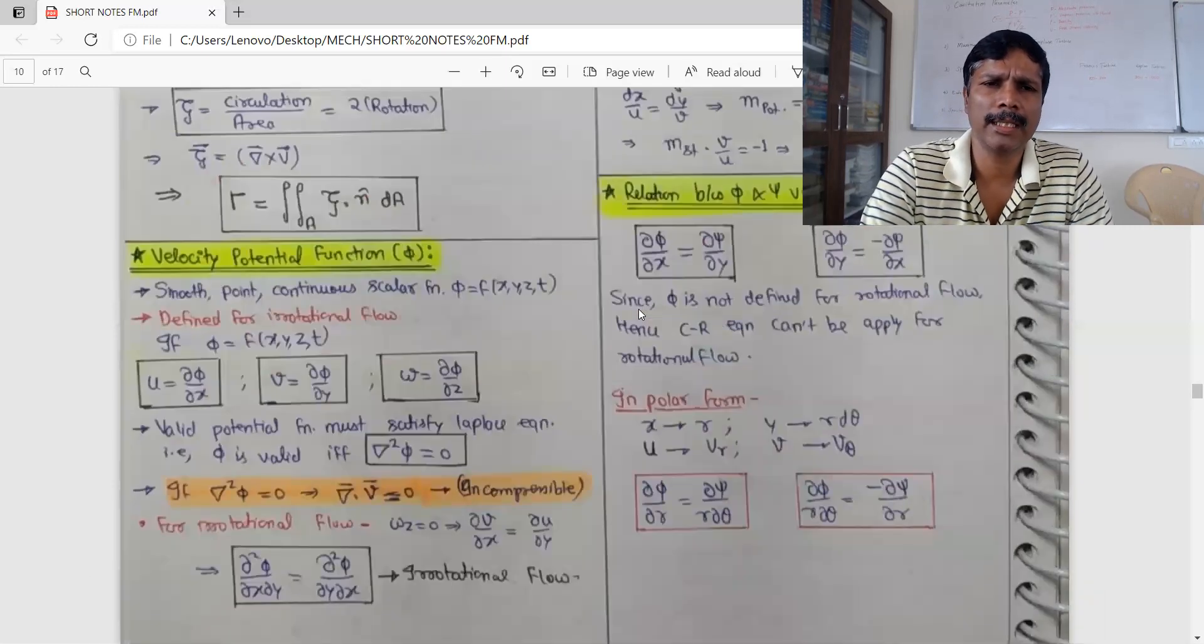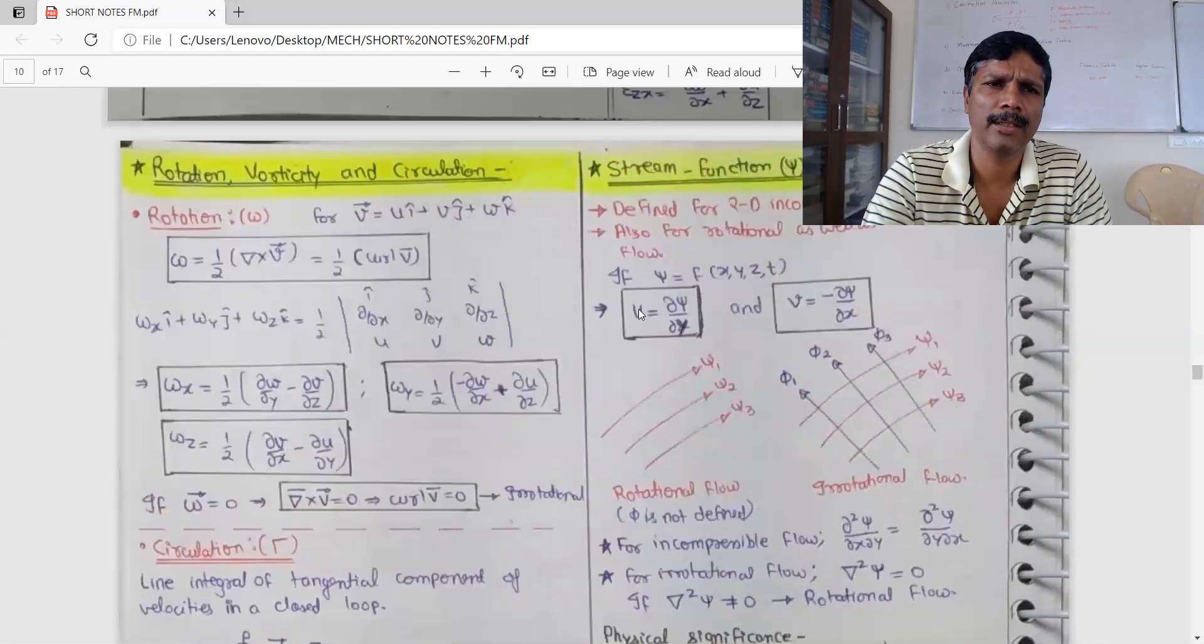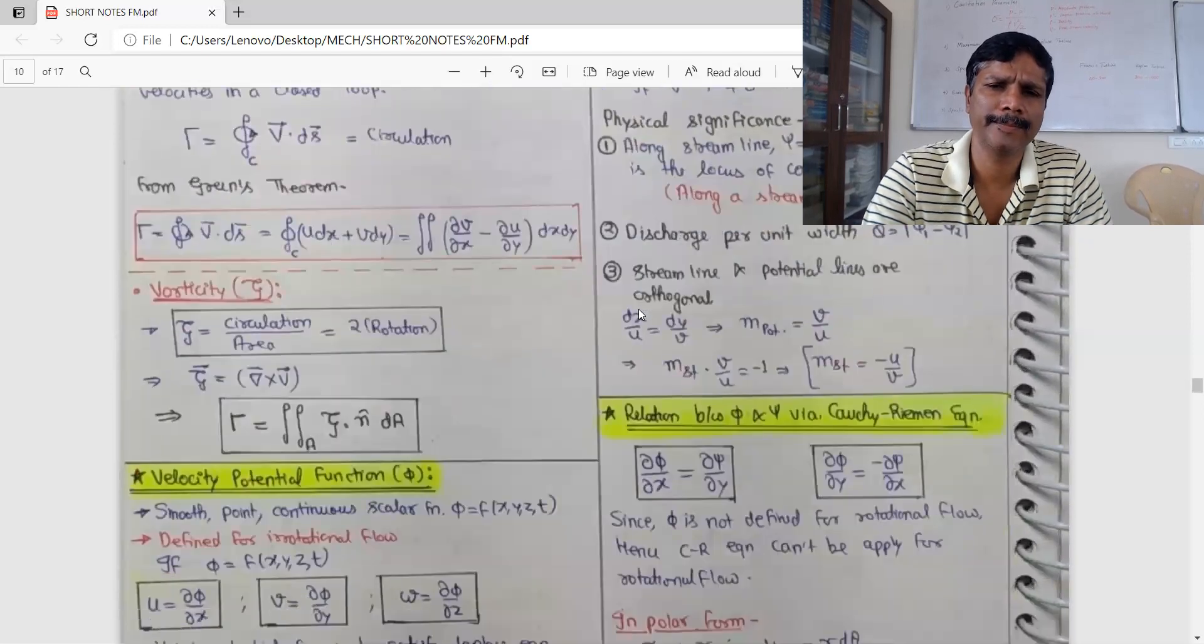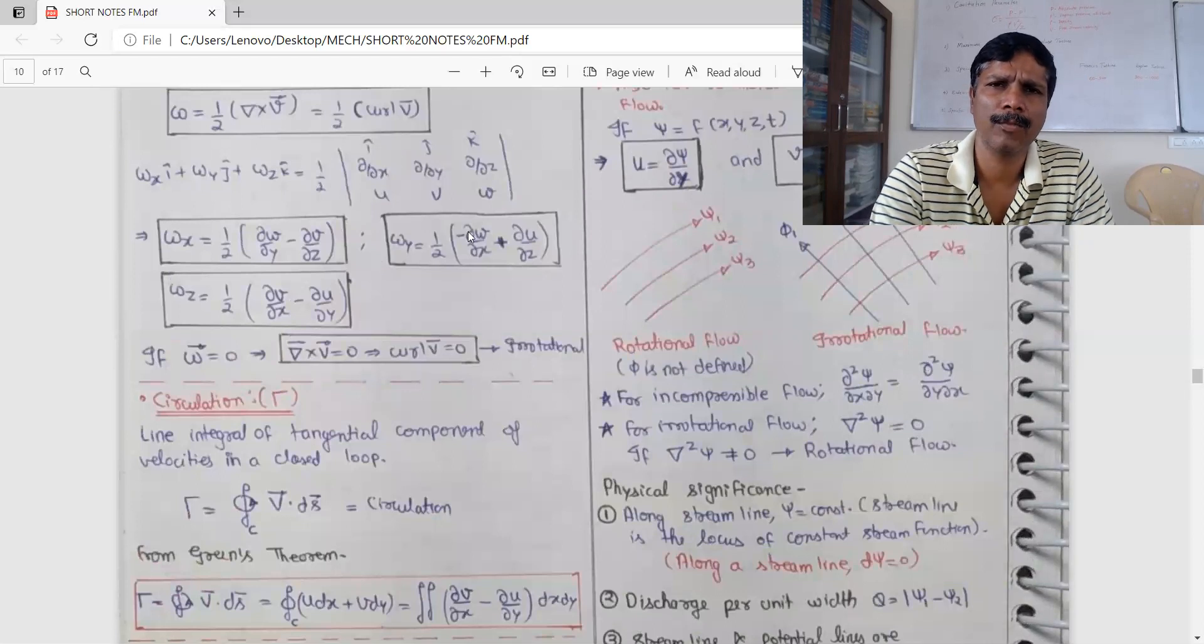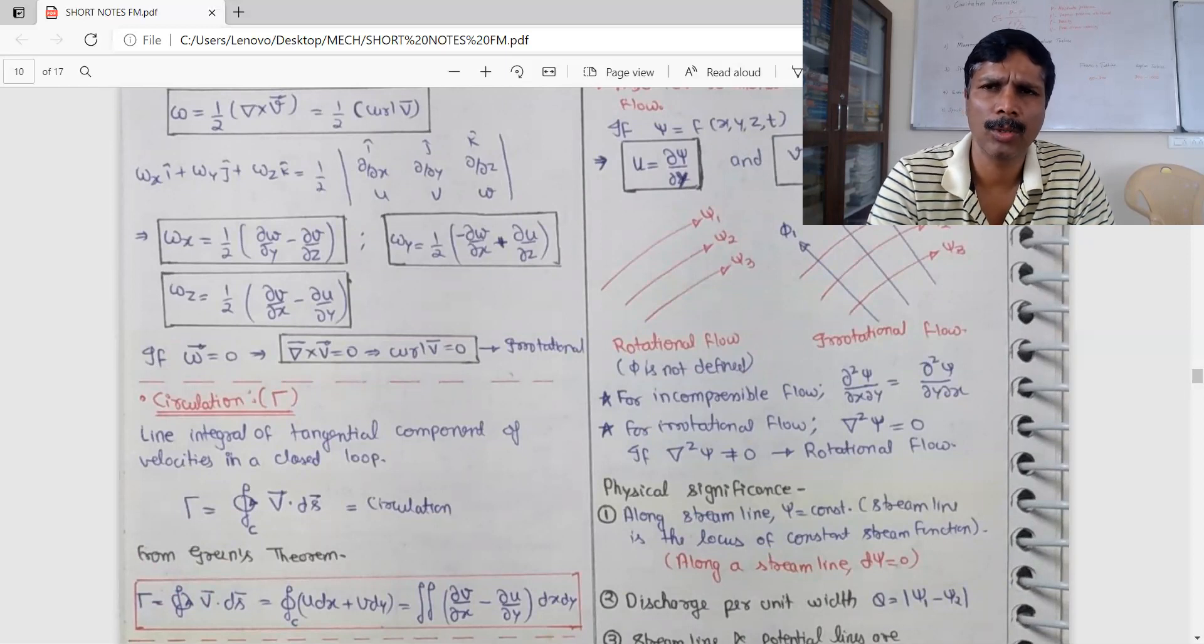So in this lecture we have seen potential function and stream function and significant flow net. Thank you champions. It may be useful for your preparation. Thank you.